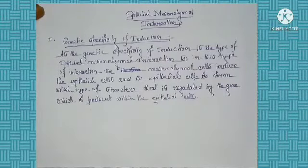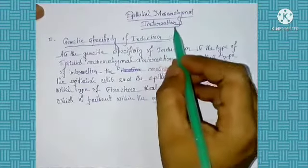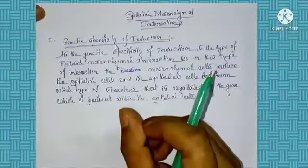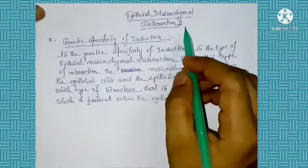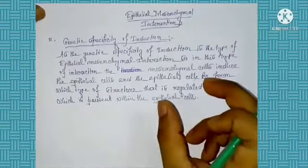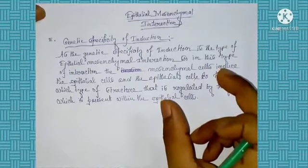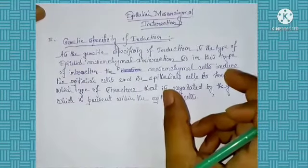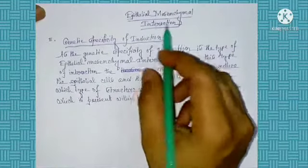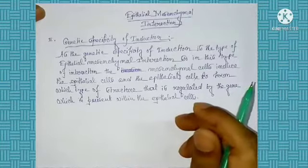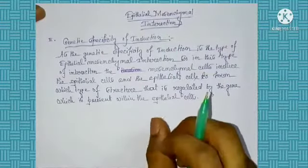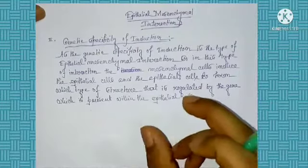Hello friends, welcome to my channel Netbitdarati. Today I discuss about the second type of epithelial-mesenchymal interaction, that is the genetic specificity of induction. In the previous class we learned about the definition of the epithelial-mesenchymal interaction, which is the interaction that takes place between the cells of the epithelial and the mesenchymal region. The epithelial-mesenchymal interaction is of two types: regional specificity of induction and genetic specificity of induction.